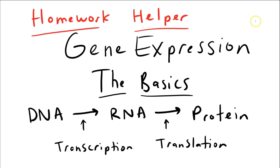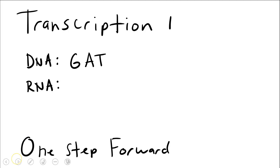In this screencast we'll cover the process of transcription and the process of translation, and how DNA is used to produce a protein through this process. You'll need a genetic code table — your teacher has probably provided one, otherwise open your textbook — because we'll need that for translation.